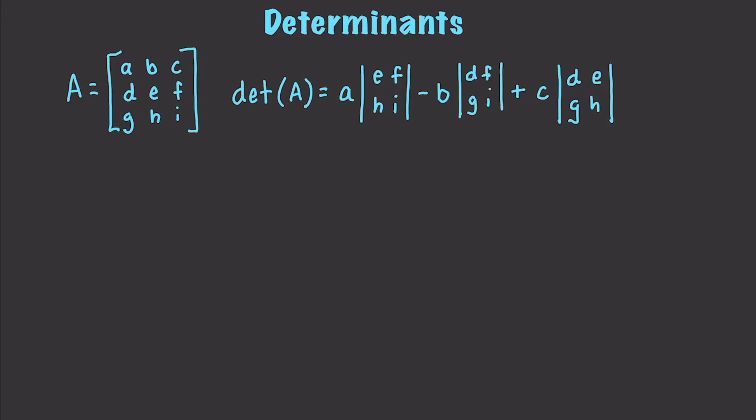Another way of writing this would be to say A times E I minus F H, minus B times D I minus F G, plus C times D H minus E G, exactly like that. And if there was a D, of course, this would be negative D, and so forth and so on.